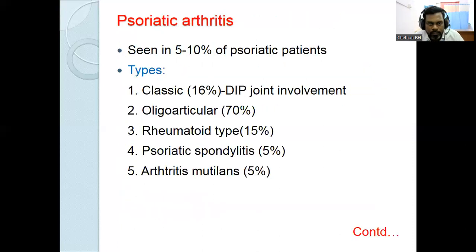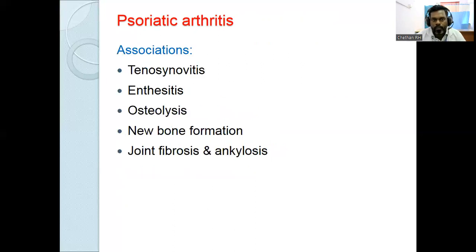Psoriatic arthritis is seen in 5 to 10% of psoriatic patients. There are five types: classical distal interphalangeal joint involvement, asymmetrical oligoarthritis (most common, 70%), symmetrical polyarthritis of rheumatoid type (15%), psoriatic spondylitis, and arthritis mutilans. Associated features include tenosynovitis, enthesitis, osteolysis, new bone formation, joint fibrosis, and ankylosis.